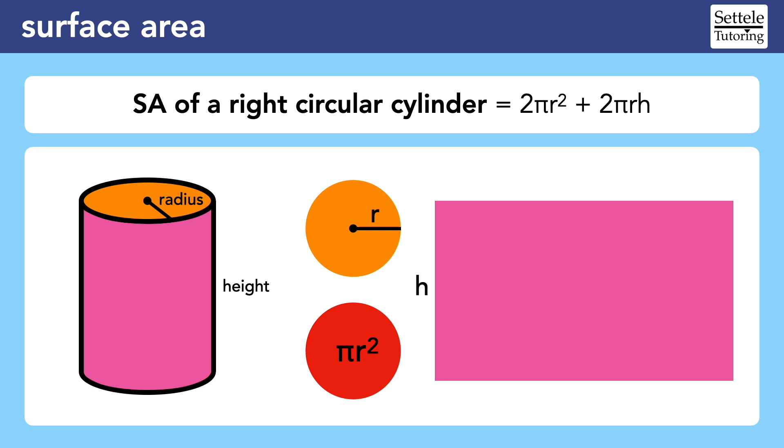Remember that this rectangle is wrapped around the circles, so the length of the rectangle is the circumference of the circle, which we know is 2π times the radius. Now it should be clear why the end of the surface area formula is 2πrh.